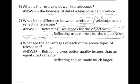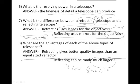What are some advantages of each type? Refracting, or bending light, gives better quality images than an equal-sized reflector. Reflecting, though, can be made larger. So a reflecting telescope can be much larger, but it produces lower quality images.